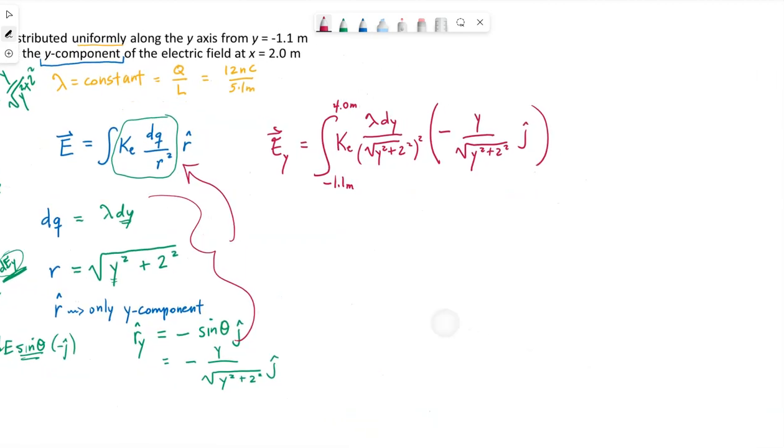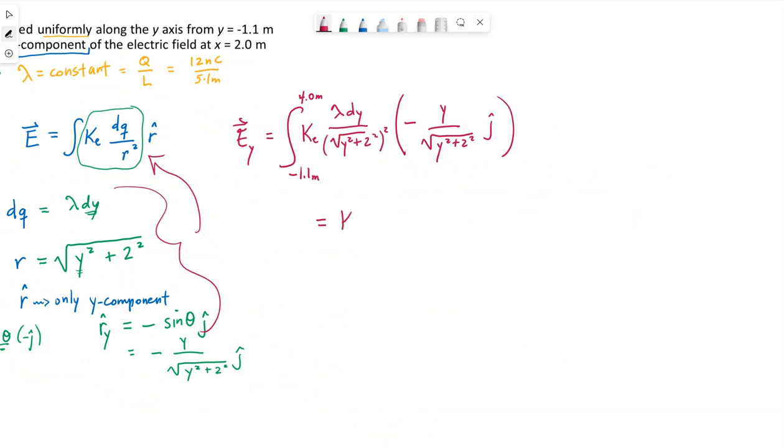Okay, let's pull out constants. K is a constant, y is not, lambda is a constant because it said the charge was uniformly distributed. I'm going to go ahead and bring out the negative j-hat as well. I still have y and dy and this quantity of y squared plus 2 squared to the 3 halves. I have my limits.